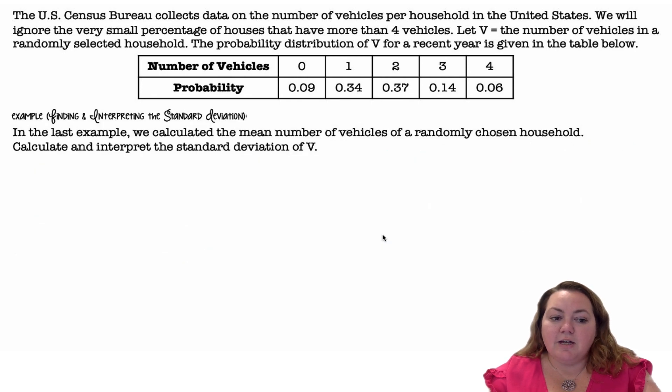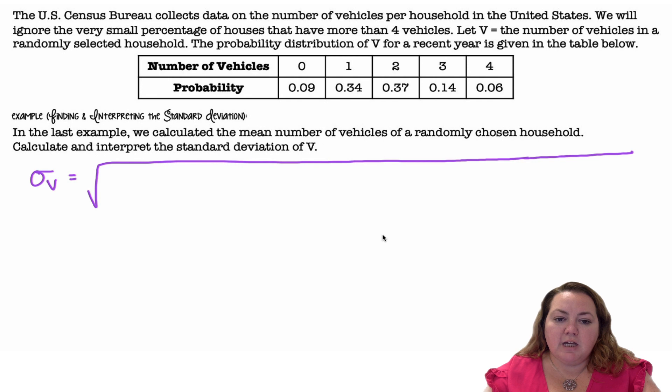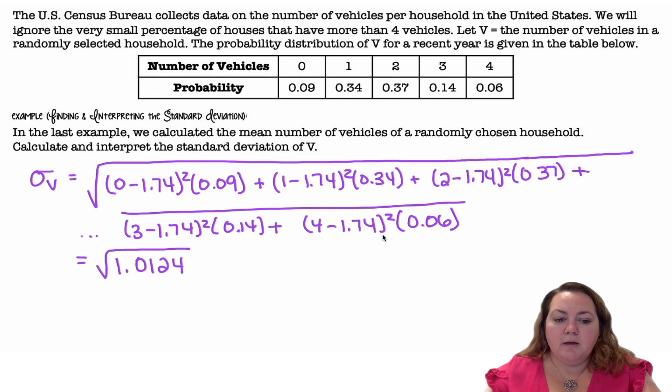Standard deviation. In the last sample, we calculated the mean, so we're going to use that mean to calculate now the standard deviation. So the standard deviation, we're going to take each value minus the mean squared times the probability. So 0 minus the mean, 1.74 squared, times the probability for 0 is 0.09, plus the next value minus the mean squared times its probability of 0.34, and so on, and we get the square root of 1.0124, or 1.01.